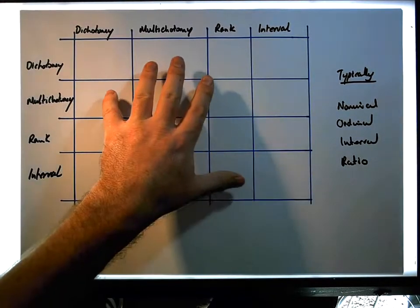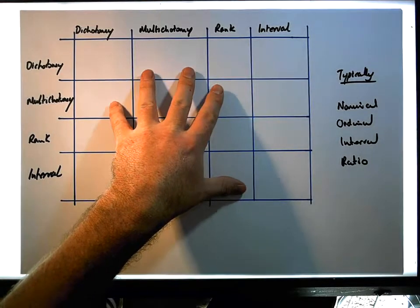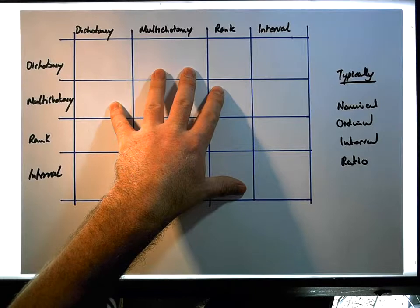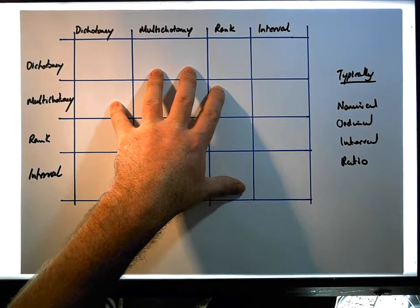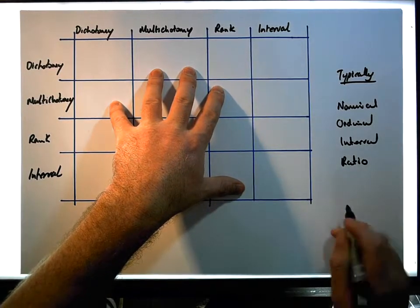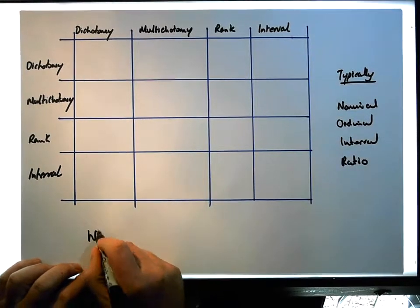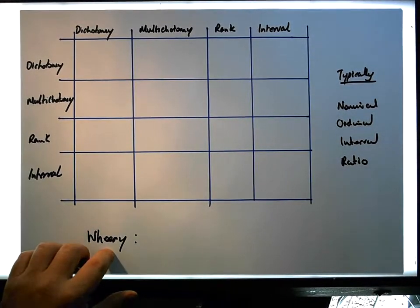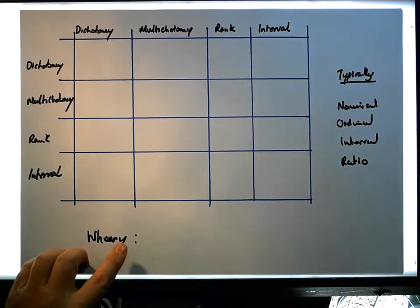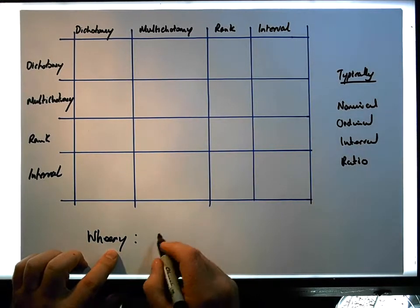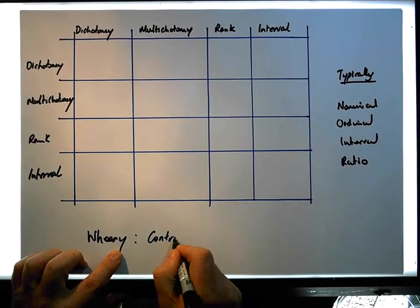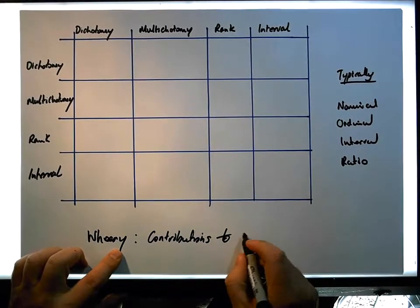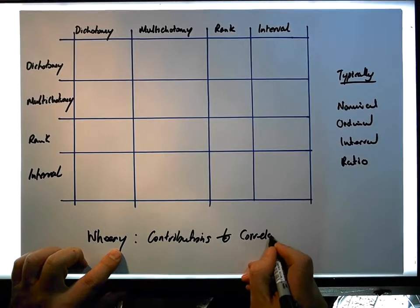In this particular video, I'm going to apply a labeling system that's based off a classic text by Weary — normally called 'Contributions to Correlation Analysis.' I don't have the exact date of that text off hand, but it's a foundational reference for the classification system we'll be using here.